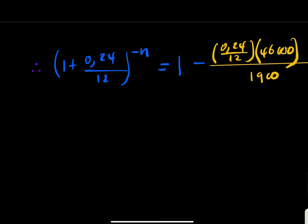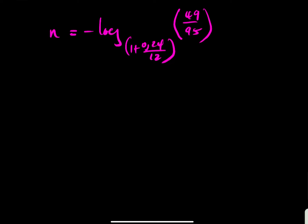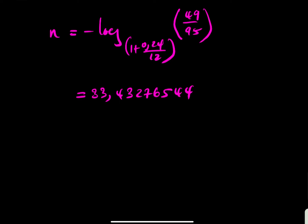Take the log on both sides to solve for n. So n = log base (1 + 0.24/12) of (49/95). Make sure you are able to do this log calculation. That gives approximately 33.43... months. This value is in months — that is important to note.